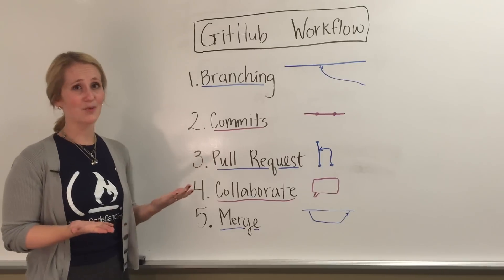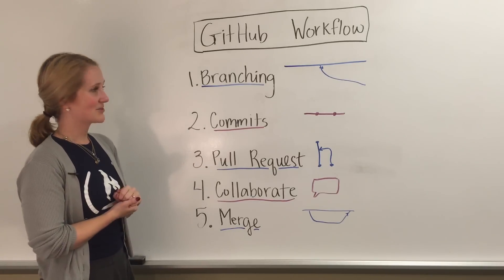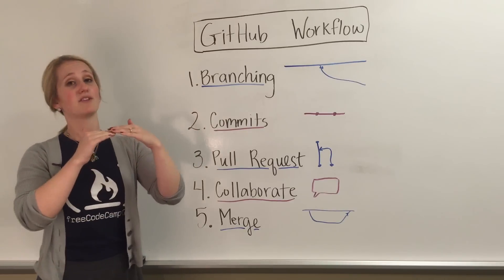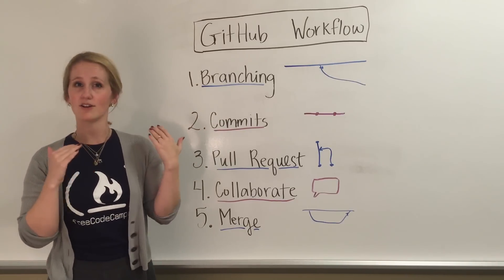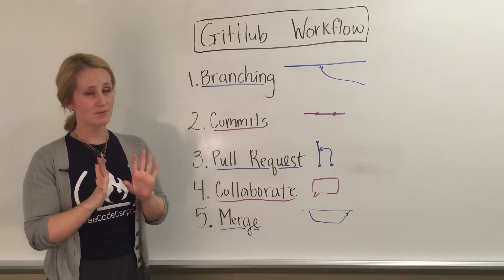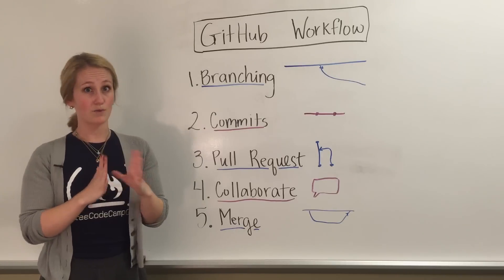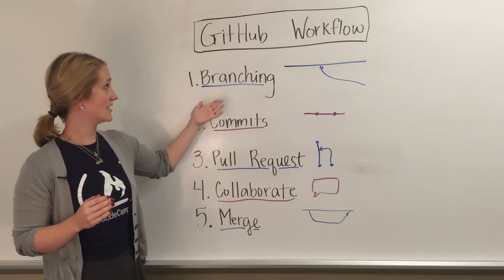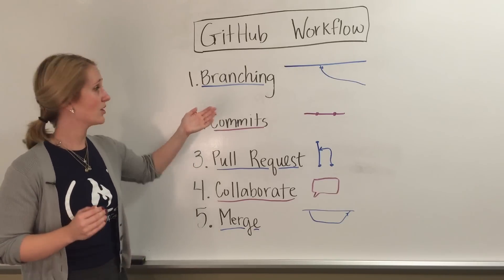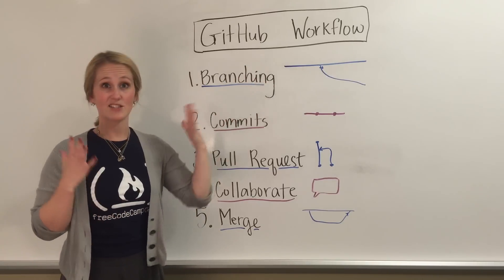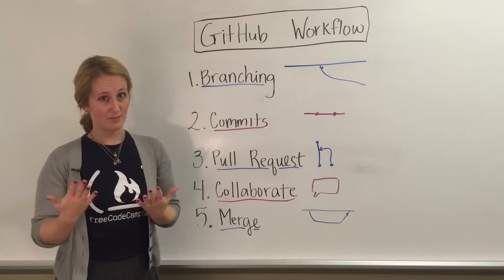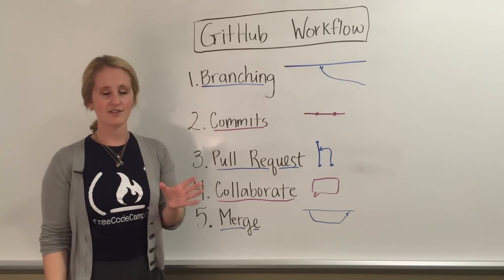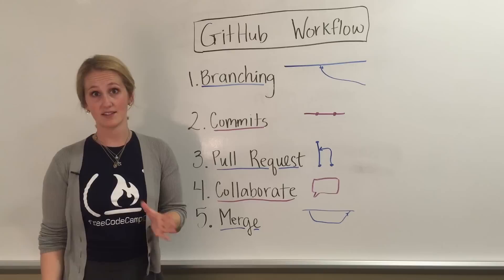Let's say you're working on a project. That project would be stored in a GitHub repository, and all of the code that was in production is on a branch called master. We don't ever want to make changes directly onto master. So the first thing we do is create another branch. When you create a branch, it's creating what feels like an exact replica of master, so you have a safe sandbox to make changes without affecting anything that's in production.